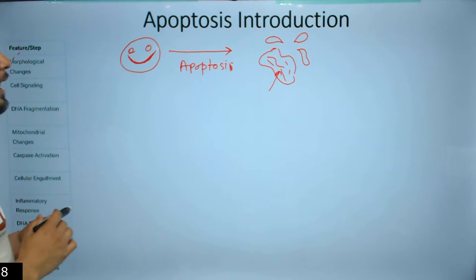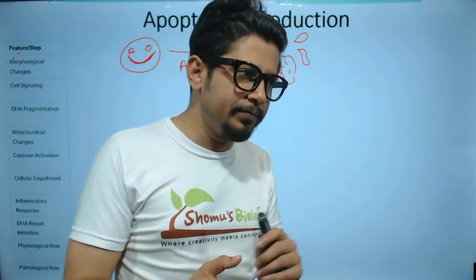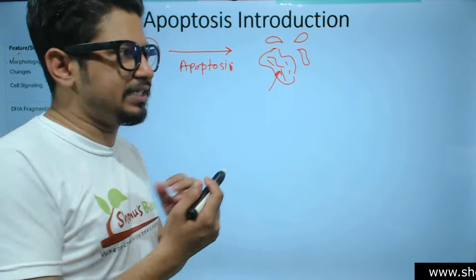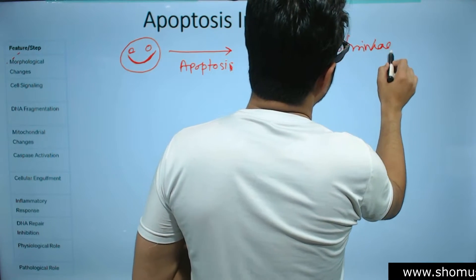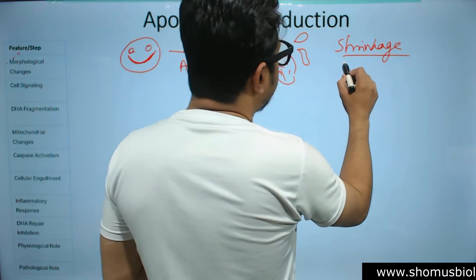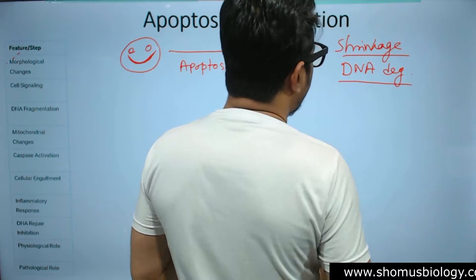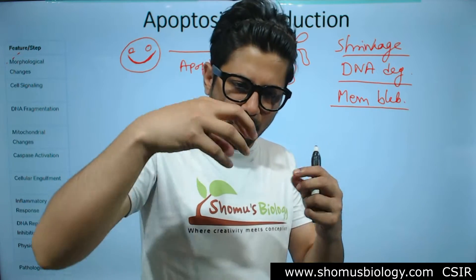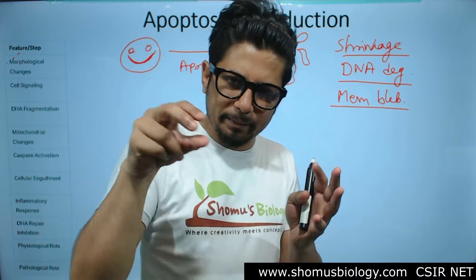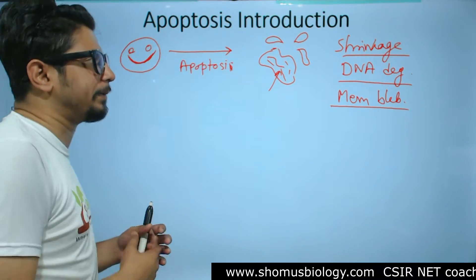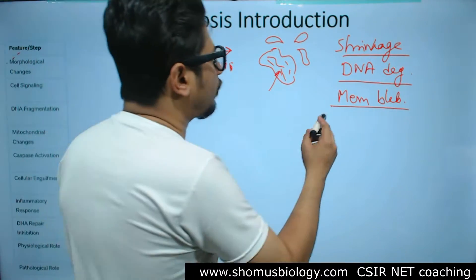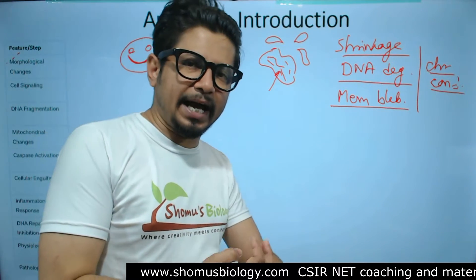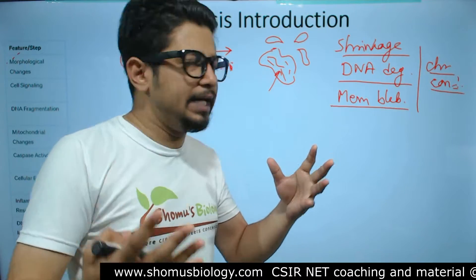The very first thing to understand about apoptosis is morphological change. The cell membrane will break down — there is shrinkage of the cell membrane. There is also DNA degradation, or nucleic acid degradation. Membrane blebbing occurs: when the cell is fragmented, all the components are floating in that area with small membrane coverings over small portions of the cell. Along with that we have chromosome condensation.